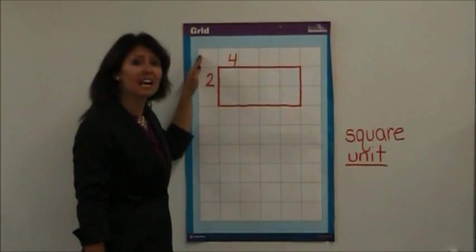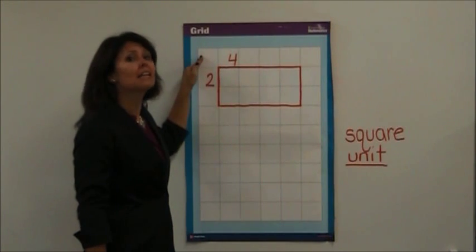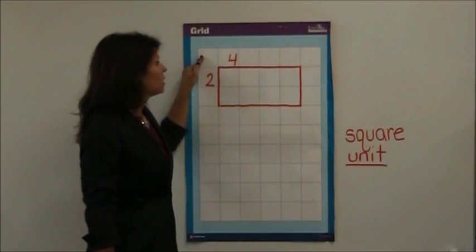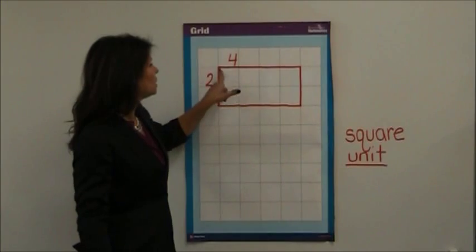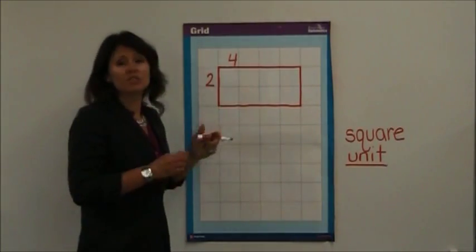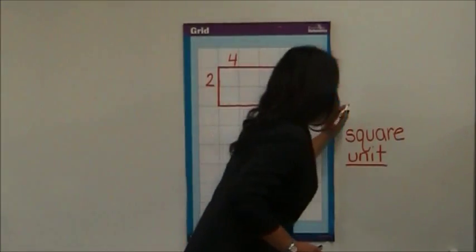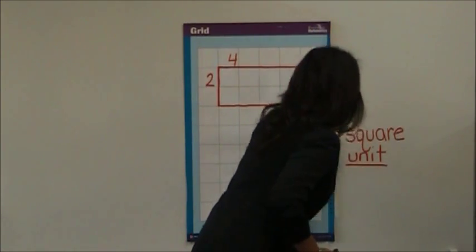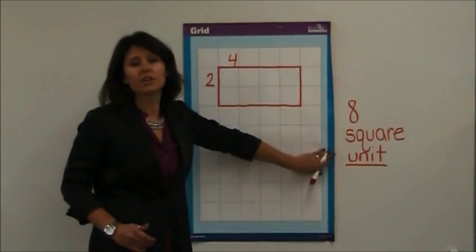And to find out the area we need to multiply length times width. Here we have 2 times 4. Our answer would be 8. For area you always have to have a square unit.